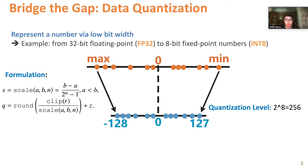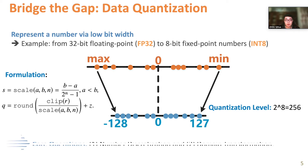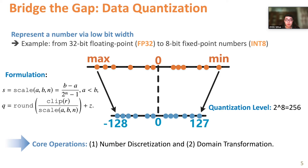The essence of quantization is to represent data with fewer bits, such as converting from fp32 to int8. There are two core operations: the first is number discretization, which maps real numbers from a continuous domain to integer values; and the second is domain transformation, which binds values from a wide range to a smaller one, such as from 32 bits to 8 bits.